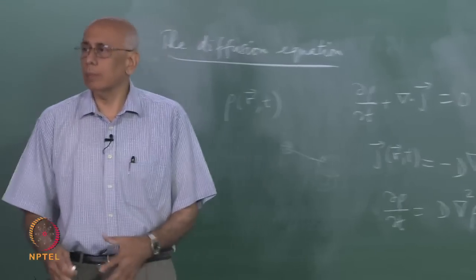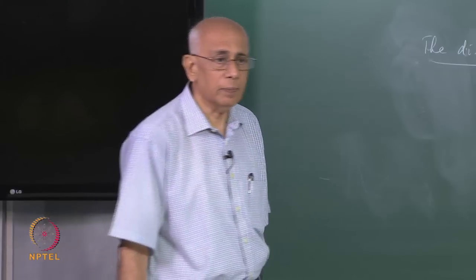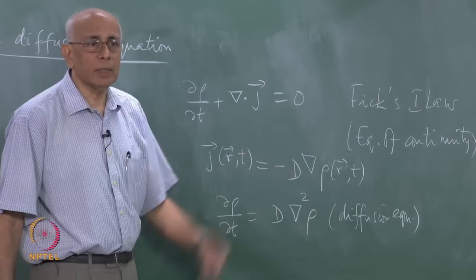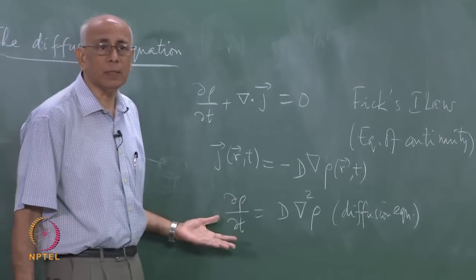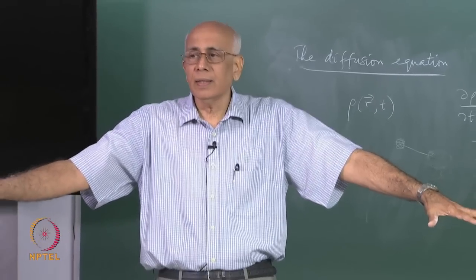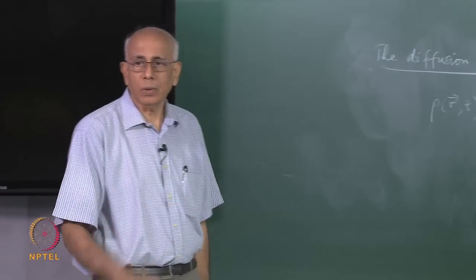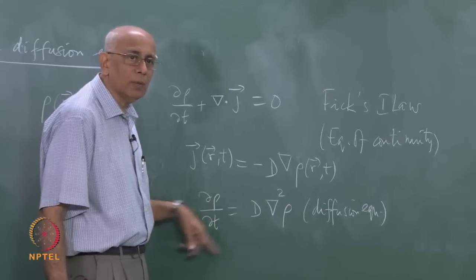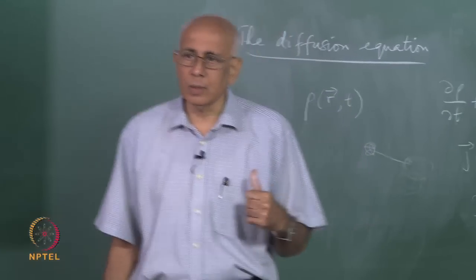We need to solve this with some boundary conditions and also an initial condition, because it involves time first-order in time. By the way, this is the first of the equations which introduces irreversibility, because it is first order in time — it is not reversible. This equation is not invariant under t goes to minus t, which is another way of saying that if you put in a drop of ink and it diffuses in water, you can wait till the age of the universe and it is not going to come back. In technical terms, being second order in space and first order in time means it is classified as a parabolic differential equation, as opposed to the elliptic differential equation which Laplace's equation was.